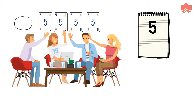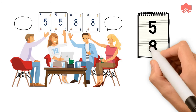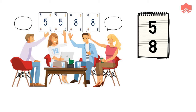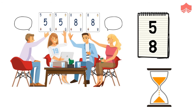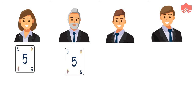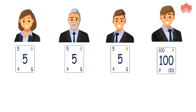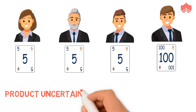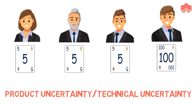But if the numbers are different, we discuss it and estimate again. When there is a tie in the voting between two consecutive sizes, for example 5 and 8, just pick the larger size and move on. It saves a lot of time and also saves the team from the perils of running out of time due to an underestimation of the size of the task. If the difference between the estimates is very large, for example 3 out of 4 people are holding 5 and 1 person is holding a 100, then there is clearly either a product uncertainty or technical uncertainty regarding the task. In such a case, it is better to put the story aside and come back in the next meeting after doing proper research.